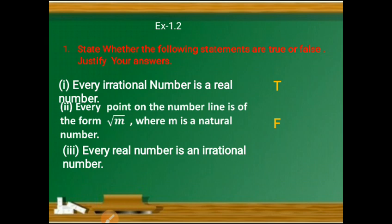Third question: every real number is an irrational number. The answer is false. Why? Because real numbers are divided into two parts — rational numbers and irrational numbers. Every irrational number is a real number, but every real number is not irrational. For example, 1/2 is a rational number but not an irrational number. So 1/2 is a real number but not an irrational number. Answer is false.